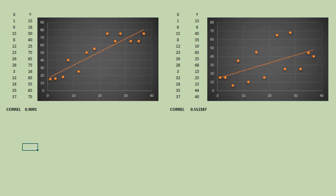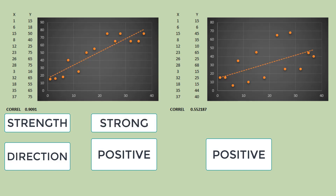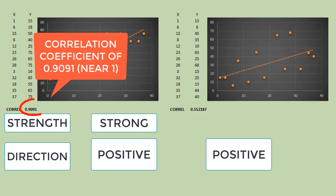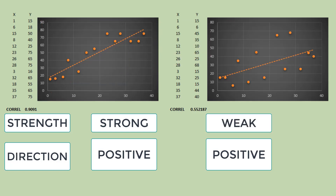These two have the same direction of relationship — both show a positive relationship. The only difference is the strength of relationship. One shows a strong relationship based on its correlation coefficient of near one and on its scatterplot, while the other shows a weak relationship.